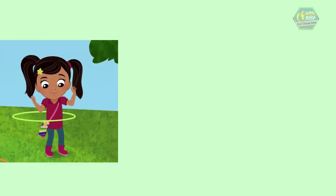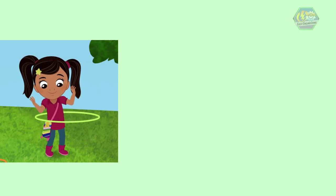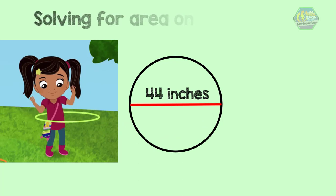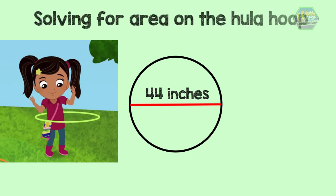Now let's have another example. Earlier, we helped Regine find the circumference of her hula hoop. Now she also wants to find the area of the hula hoop. Again, the diameter of her hula hoop is 44 inches. Let's help Regine find the area.